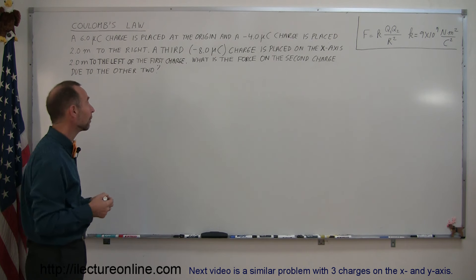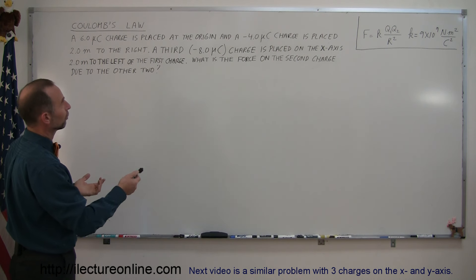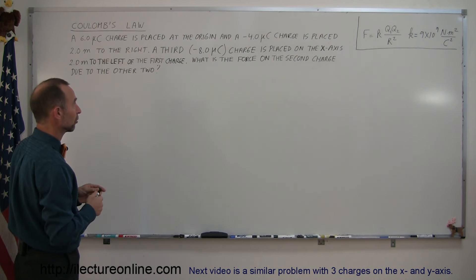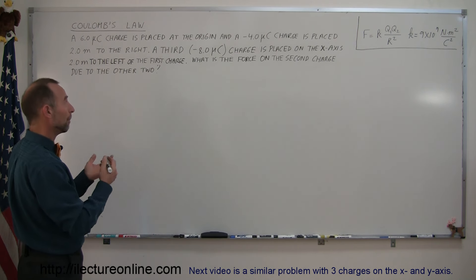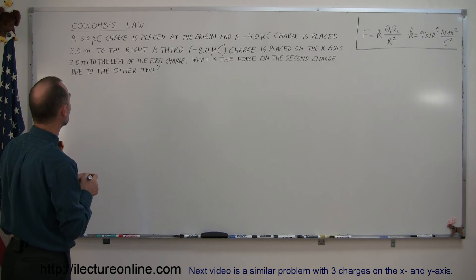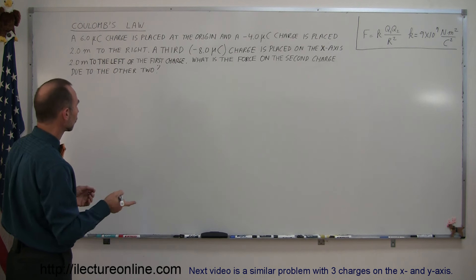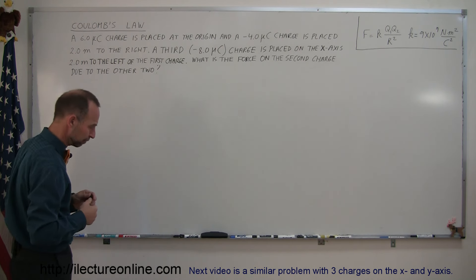Let's go ahead and read the problem. We have a 6-micro-Coulomb charge placed at the origin, and a negative 4-micro-Coulomb charge placed 2 meters to the right, and then there is a third minus 8-micro-Coulomb charge placed on the x-axis 2 meters to the left of the first charge. What is the force on the second charge due to the presence of the other two?